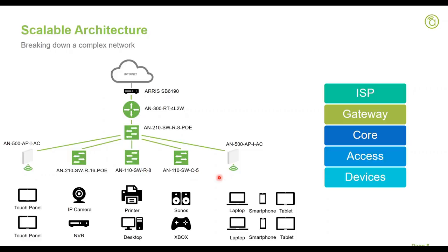The same applies to edge switches. If you have an eight-port PoE switch powering eight cameras and two years later the customer wants to add cameras, all you have to do is swap the eight-port with a 16-port. It's one component change in the network that doubles the capacity of your IP cameras. So let's go layer by layer and share some tips and tricks for each building block.